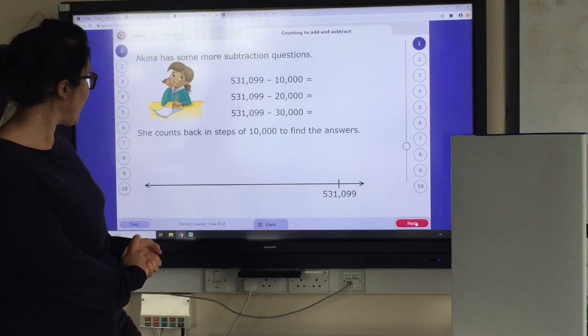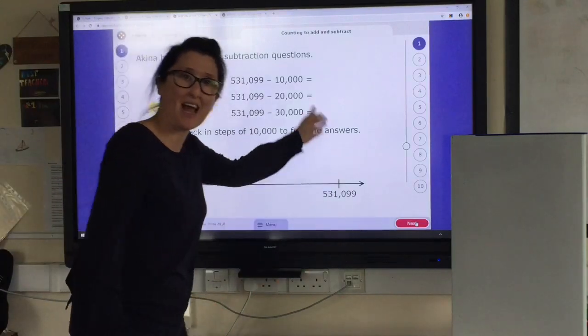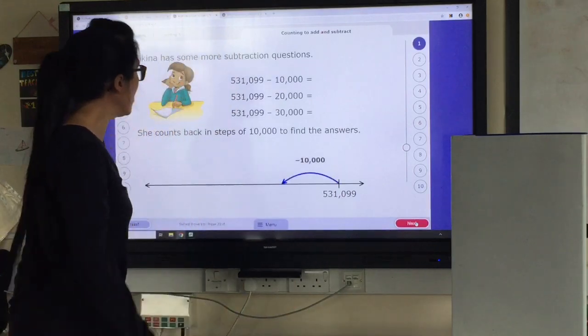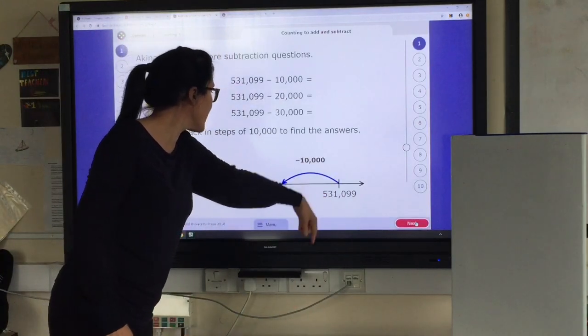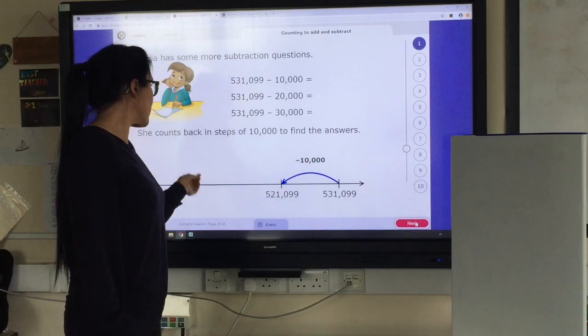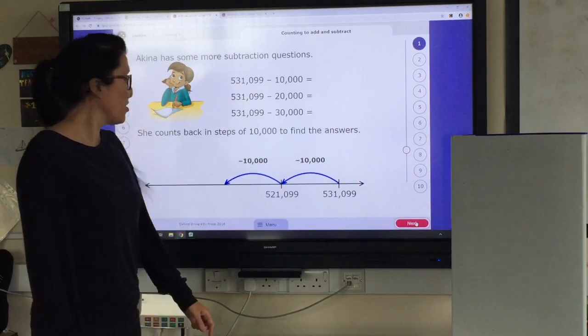So we start off with 531,099. At this end of the number line because we're subtracting, we're going backwards. Subtract ten thousand. So that three is going to become a two. Subtract another ten thousand. It's going to become a one.